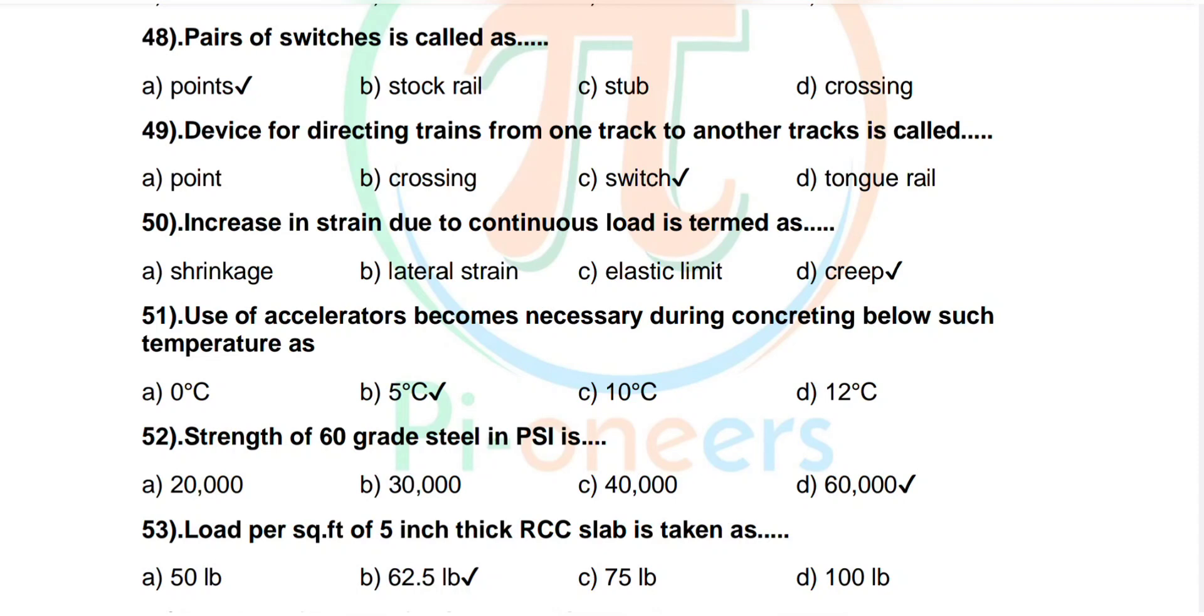Question number 49: A device for directing trains from one track to another track is called. Options are point, crossing, switch, tongue rail. Correct answer: switch.